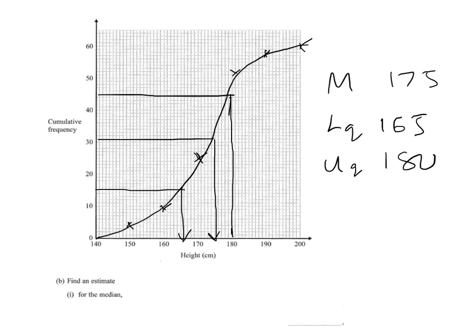And so the interquartile range will be 180 subtract 165. So on my graph 15, they'll allow a range probably from about 13 to 17. But you can see that I've got the interquartile range of 15 and the median of 175.